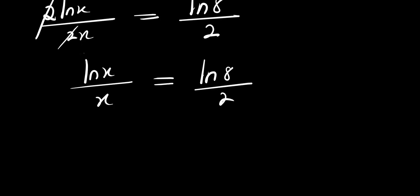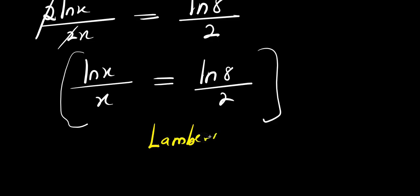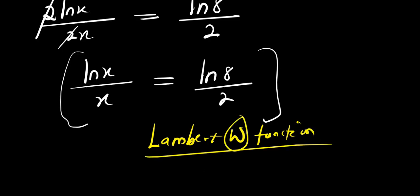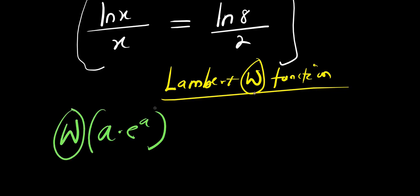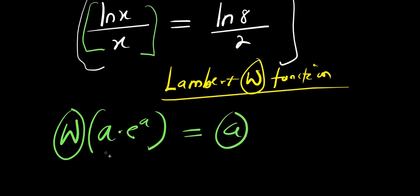To solve this further, we make use of what is called the Lambert W function, represented with the capital letter W. For us to apply this function, we must have an expression of the form a times e to the power of a. Applying the Lambert W function to that gives us a as the result. So we need to convert our equation into that form.